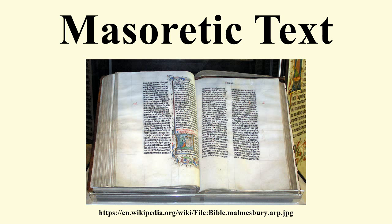The Masoretic text is widely used as the basis for translations of the Old Testament in Protestant Bibles, and in recent years also for some Catholic Bibles, although the Eastern Orthodox churches continue to use the Septuagint as they hold it to be divinely inspired. In modern times the Dead Sea Scrolls have shown the Masoretic text to be nearly identical to some texts of the Tanakh dating from 200 BCE, but different from others.